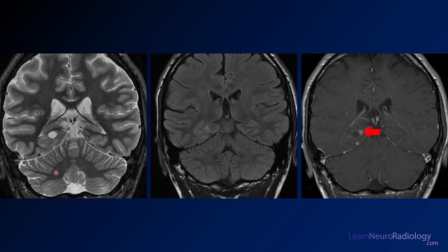On the coronal images you see the same thing — a very well-defined T2 hyperintense region with maybe a slightly more ill-defined region around it. On the coronal FLAIR the lesion is actually hard to see, but compared to the contralateral side, the perihippocampal gyrus is a little bit expanded. On post-contrast you again see that enhancing nodule along the medial margin.